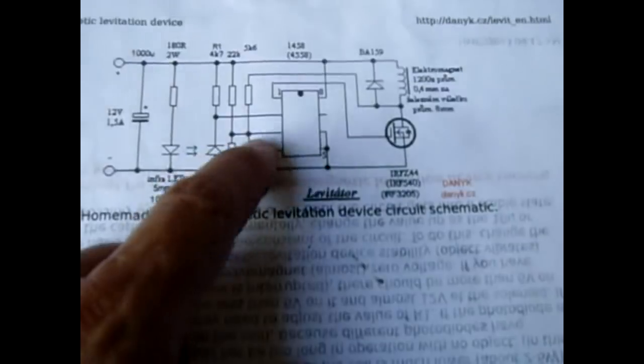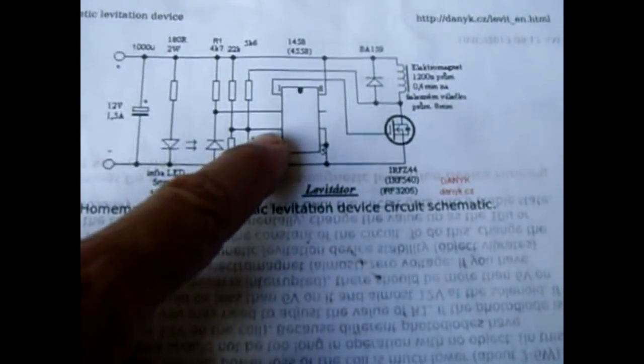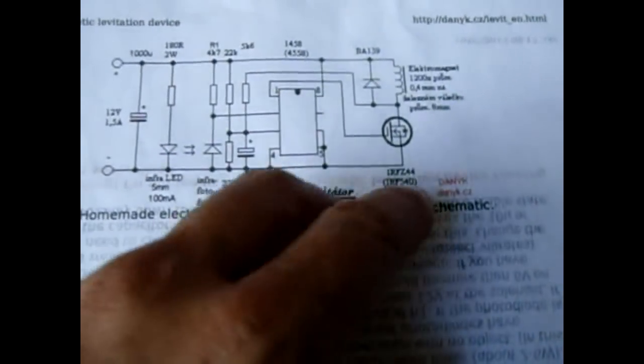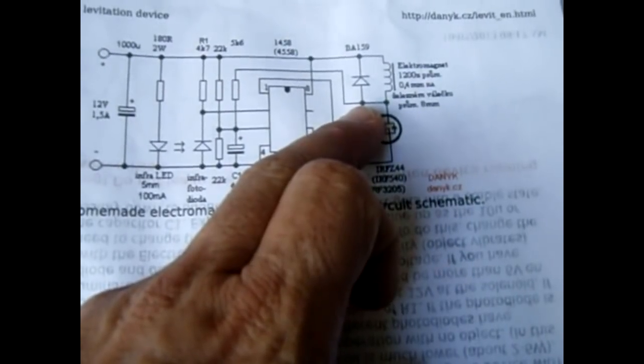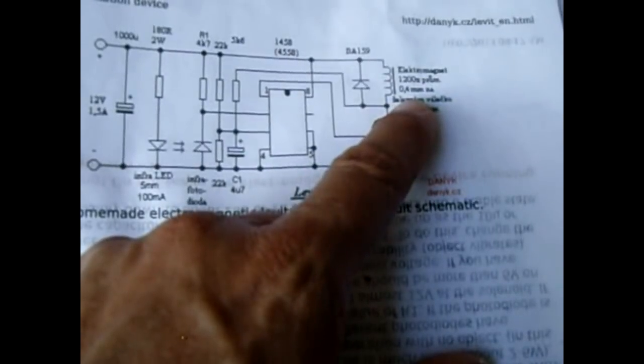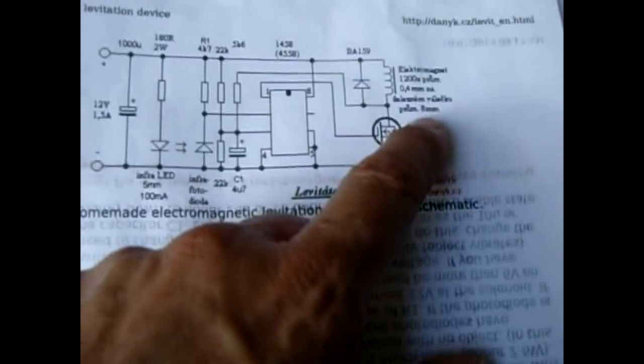You have a voltage divider right here. 22K, 22K. That flows into pin 3. So, it's monitoring between these two pins, the voltage. And that's pretty much it. You just have a reverse biased diode to protect against back EMF for killing the MOSFET. And your 1200 turns of .4mm wire, which is roughly 26 gauge, wrapped around an 8mm core.